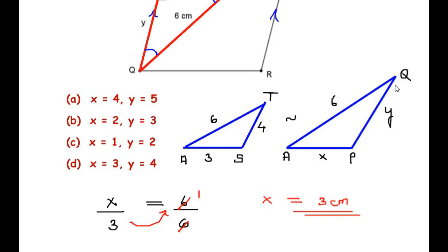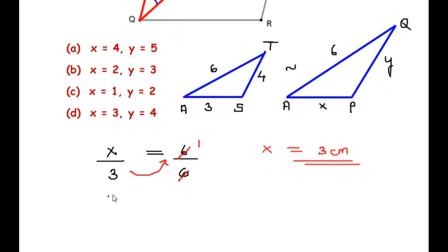So x we got it as 3. Now similarly taking the y, so here PQ is y, so let me write y over its corresponding side is ST which is 4, is equal to, I'm going to take again AQ which is 6 over its corresponding side is AT which is 6 again. So 6 and 6 cancels again giving us 1, and 4 multiplies with 1 giving us 4. So y is equal to 4 centimeter.